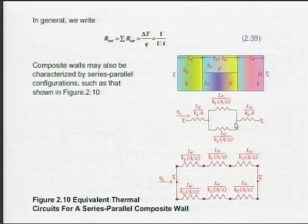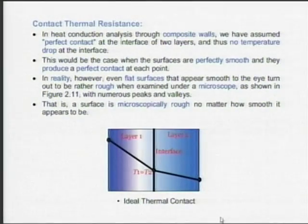In a series circuit, current remains constant; in a parallel circuit, voltage remains constant — the same logic applies to thermal circuits. In a parallel thermal circuit, the driving temperature difference (ΔT) is the same across all parallel paths, just as voltage is the same across parallel electrical resistances.